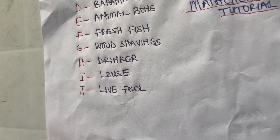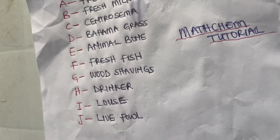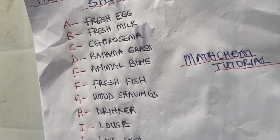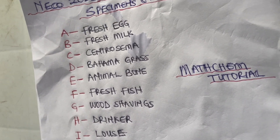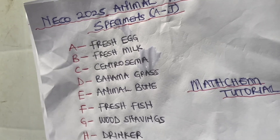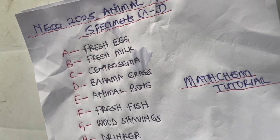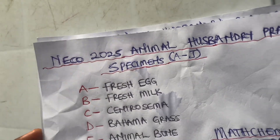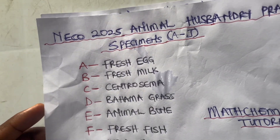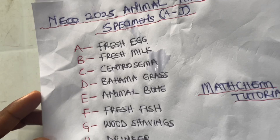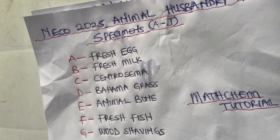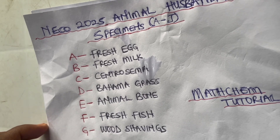Specimen J is a live fowl — a chicken that has not been killed. These are the specimens NECO instructed schools to provide, and they will be provided to you on the day of your exam. Now let's go into some possible questions that can be asked based on these specimens.